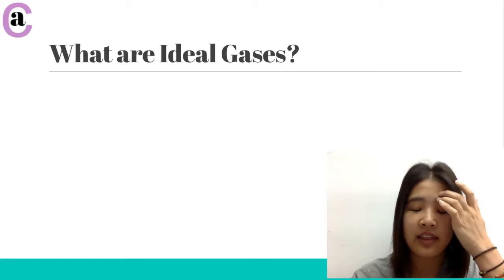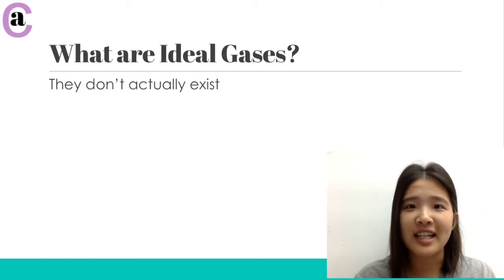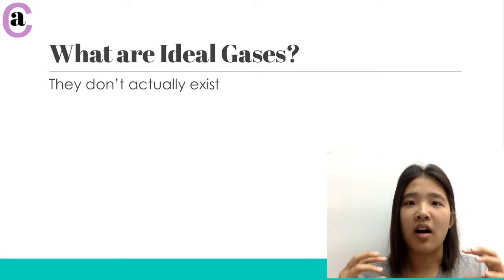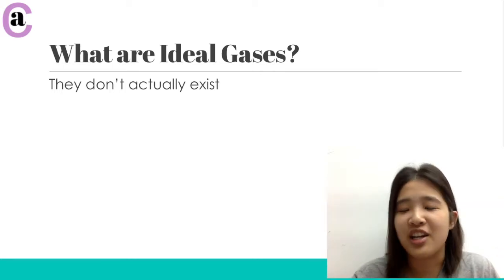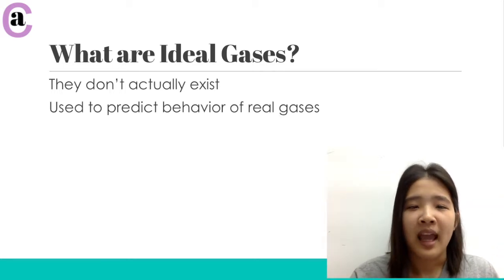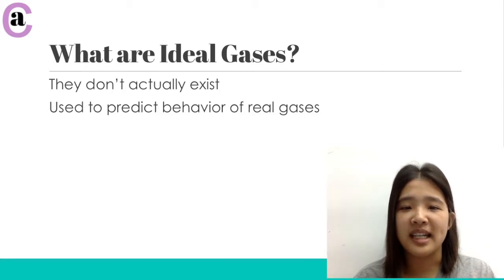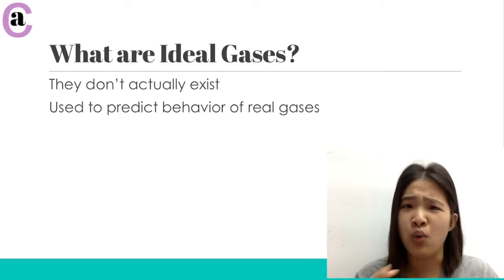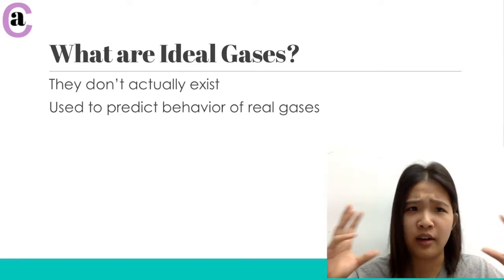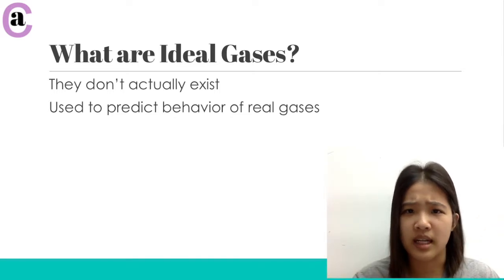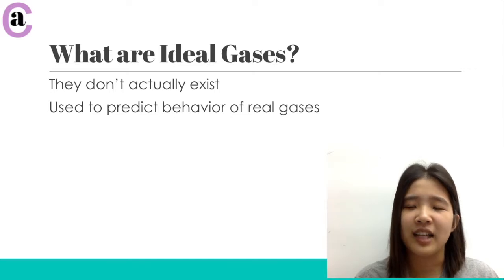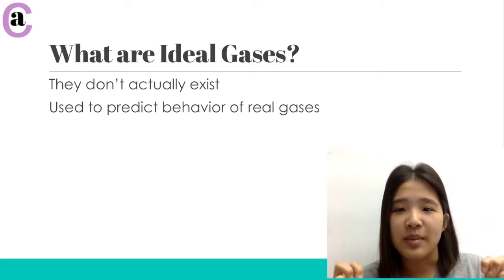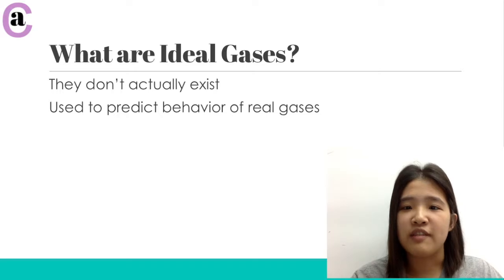Just like their name suggests, ideal gases are not actually real. They're a figment of your imagination, if you will. And they are actually used to predict the behavior of real gases, because real gases have a lot of different nuances that make it really hard to predict exactly what their behavior will be under a certain set of circumstances. So using ideal gases as a sort of best substitute is the best way to figure out what those real gases are actually going to be like.